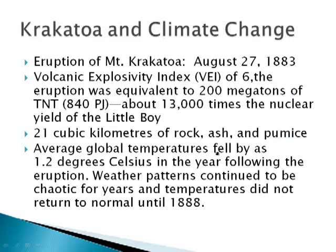One of those instances is Krakatoa. Krakatoa erupted in 1883. It had a volcanic explosivity index of six. It erupted with 200 megatons of TNT, which is 13,000 times the nuclear yield of the bomb dropped on Hiroshima or Nagasaki — called Little Boy. It produced 21 cubic kilometers of rock, ash, and pumice.